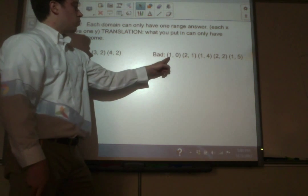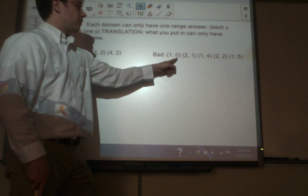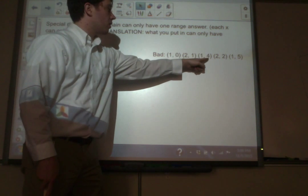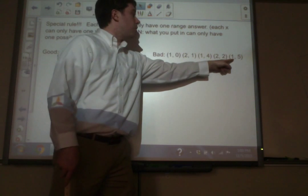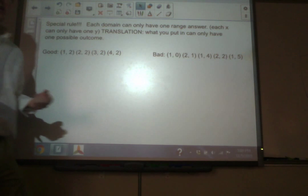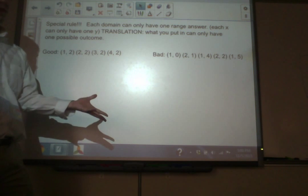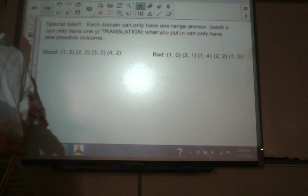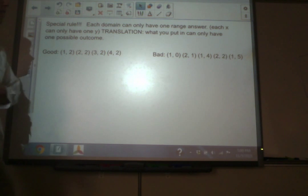Here's what would be bad. You put in 1, one time to the function, and you get 0. Another time you put in 1 into the function, and you get 4. And another time you put 1 into the function, and you get 5. That would be bad, because basically what that's saying is, when you put 1 into the function, you do not know what's going to come out on the other side. That makes it a bad function, or really it makes it not a function at all.